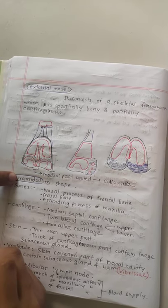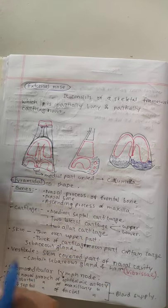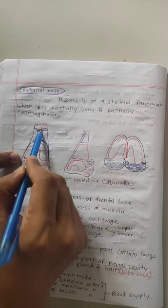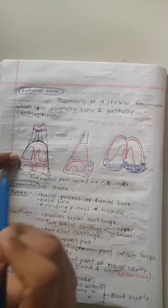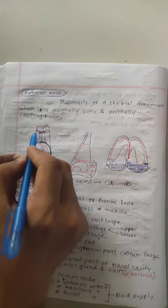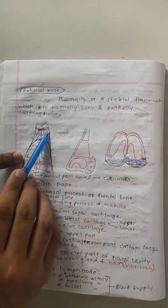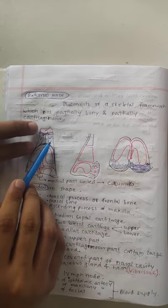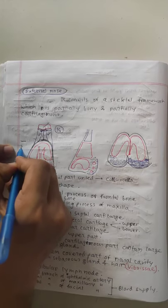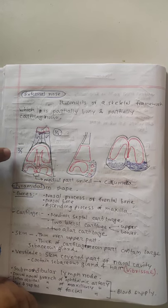The external nose has bones. If you look at the anterior view, here is the frontal bone, specifically the nasal process. Then the nasal bone. Below that is the maxillary bone, specifically the ascending process of the maxillary bone. These three bones make up the upper one-third. The lower two-thirds is cartilaginous.